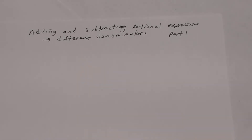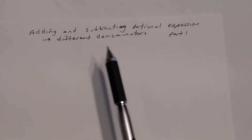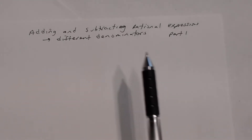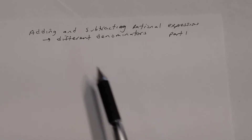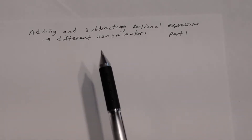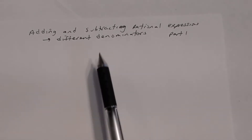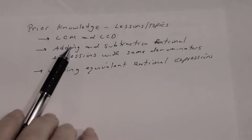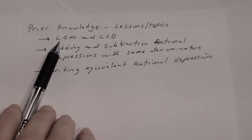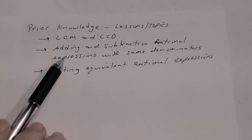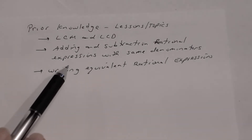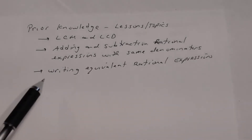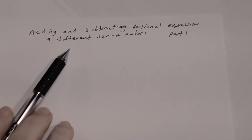In this lesson we're going to add and subtract rational expressions that have different denominators — this is part one, so there will be about two or three parts to this topic. The prerequisites for part one and part two: make sure you go back and review lessons on least common multiple and least common denominator, adding and subtracting rational expressions with the same denominators, and writing equivalent rational expressions.